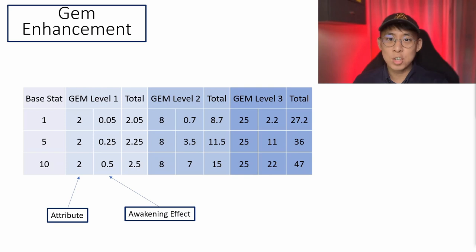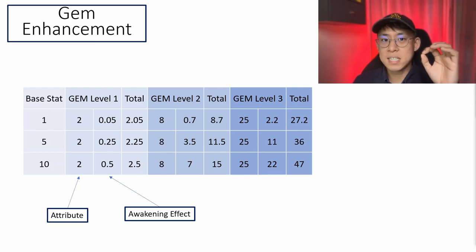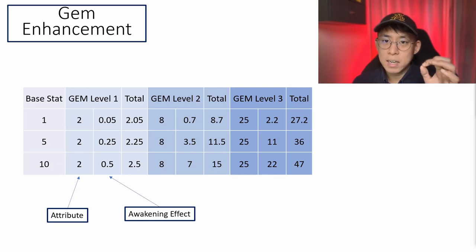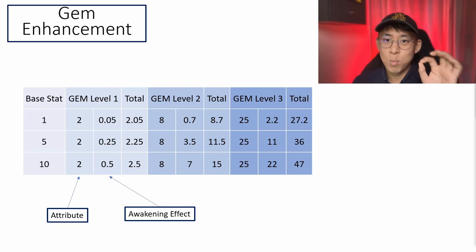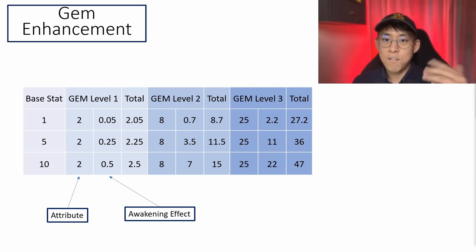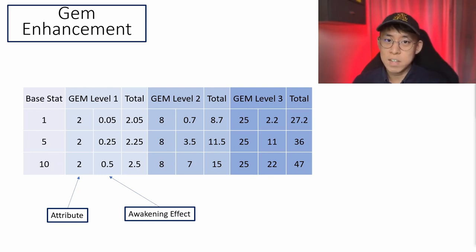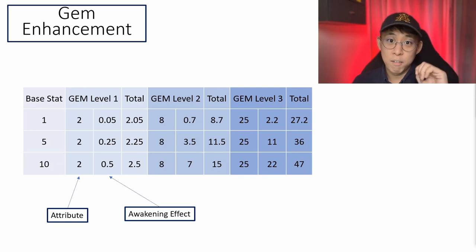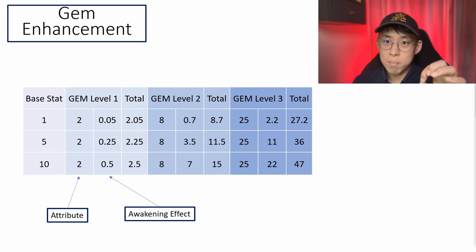The last tip is that basic attributes have a very large impact on gem efficiency. Looking at the table, the first row shows a shoe with base stat of 1, the second row a base stat of 5, and the last row a base stat of 10. For a gem at level 1, it adds 2 to its basic attributes, and there is a multiplier — called the awakening effect — which is 5% of the base stat. So 5% of 1 is 0.05, and 5% of 10 is 0.5. The total attribute provided by a level 1 gem is 2.05 for base stat 1, 2.25 for base stat 5, and 2.5 for base stat 10. For a level 1 gem, the difference between base stat 1 and base stat 10 is only about 0.5.